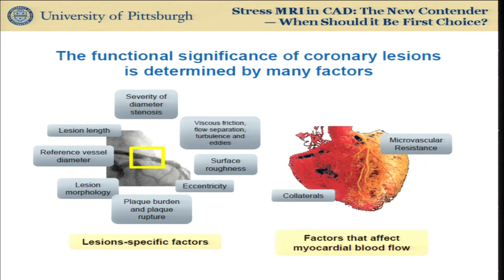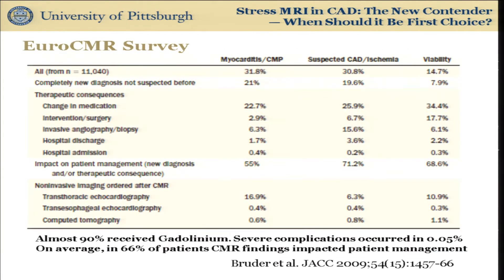Myocardial ischemia is a little bit more complex than just looking at the severity of diameter stenosis. It has to do with lesion length, eccentricity, turbulence of flow, and the morphology of that lesion. But also, let's not forget about myocardial blood flow, the presence of collaterals, as well as microvascular resistance. Ultimately, the interplay between the lesion itself and the myocardial microcirculation leads not only to symptoms but to the presence of myocardial ischemia as we would detect.